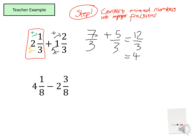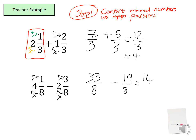Example number two. I'm going to convert these mixed numbers into improper fractions by multiplying the denominator by the whole number. Eight times four is thirty-two, add one becomes thirty-three. So we have thirty-three eighths, minus two times eight is sixteen, and the three becomes nineteen — so minus nineteen over eight. The denominators are the same, so you can simply subtract the numerators. Thirty-three take away nineteen is fourteen over eight.